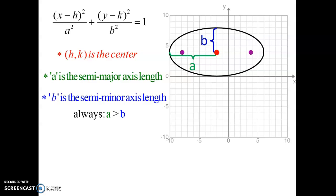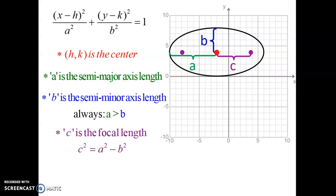One important element for graphing is the focal points, shown as those purple dots. The c value is called the focal length — the distance between the center and a focal point. There are two focal points, unlike a parabola which has only one. To find c, there is a formula: a squared minus b squared equals c squared. When you combine those two numbers and take the square root, you get the c value.